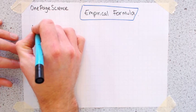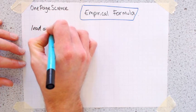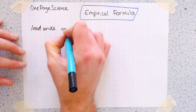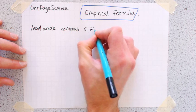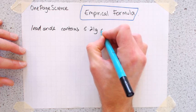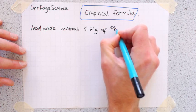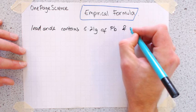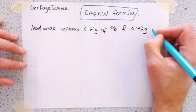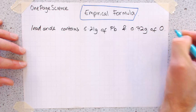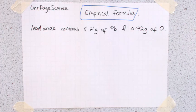So let's consider this question. Lead oxide contains 6.21 grams of lead, which is Pb, and 0.72 grams of oxygen. The question would be, calculate the empirical formula for this.